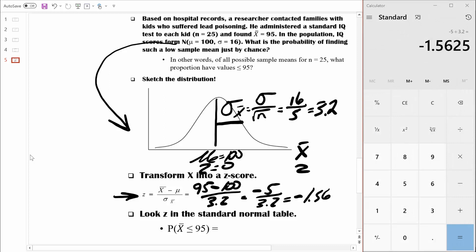That means that a sample mean of 95 is 1.56 standard errors below the mean. Let's just estimate that it's maybe somewhere right around here. That's where we would find our sample mean of 95. And that transforms into a Z score of negative 1.56.